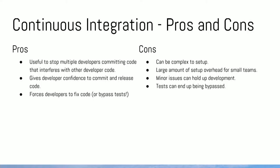Pros and cons of CI. Pros: it's useful to stop multiple developers committing code that interferes with other developers' code — that's a CI concept in general. It gives the developer confidence to commit and release code, and forces developers to fix code before deployment. The con is they might just bypass the tests because they're in a hurry. Cons: it can be complex to set up, especially for small web shops, with a large amount of setup overhead. Minor issues can hold up deployment — if it's a small thing and you just want to get it into your development environment to show people, you've got to fix that test, or you might just bypass it.